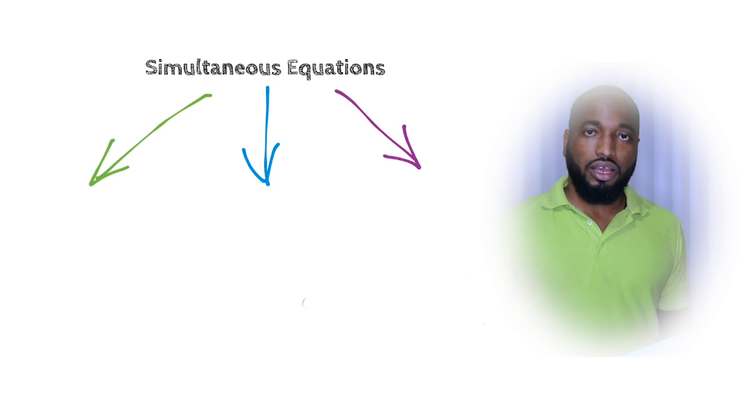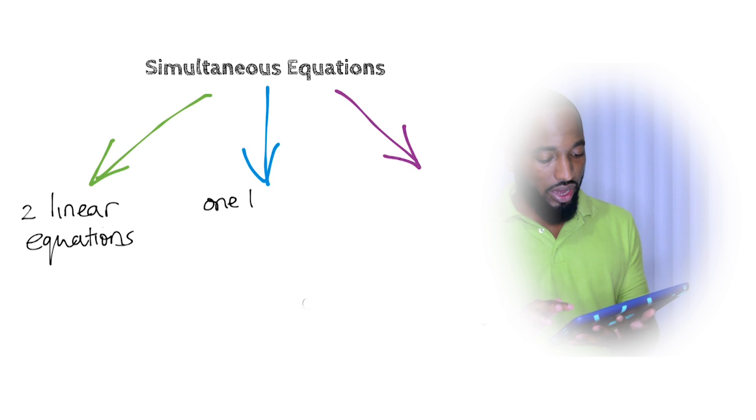Simultaneous equation comes in three main ways for CXE. First way it can come, two linear equations, two linear equations, two lines, find x, find y.